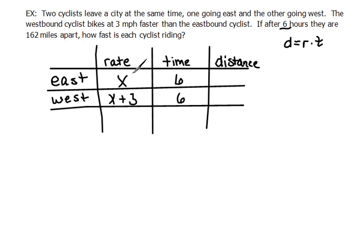Because rate times time equals distance, we can fill in our third column. The distance the first cyclist is going is 6 times x, and the distance the second cyclist is going is 6 times x plus 3.